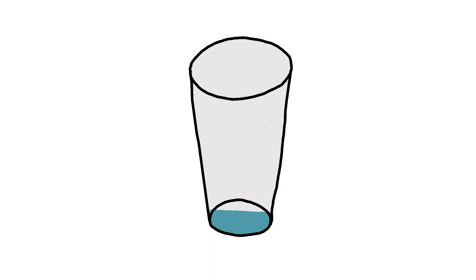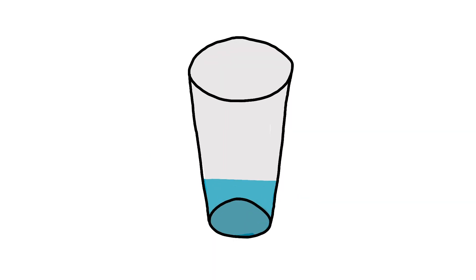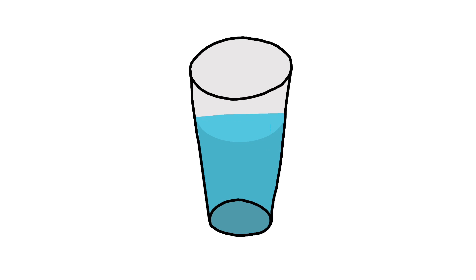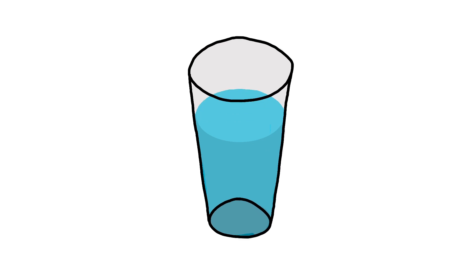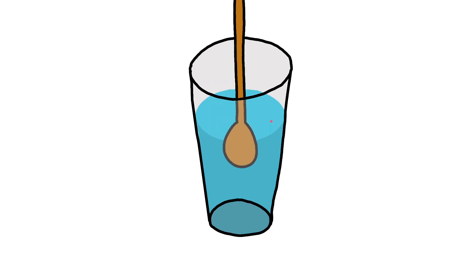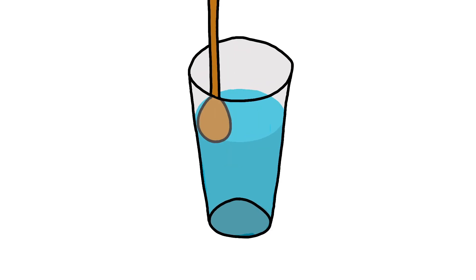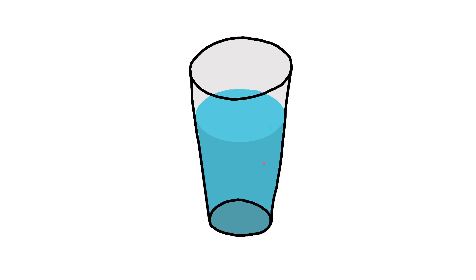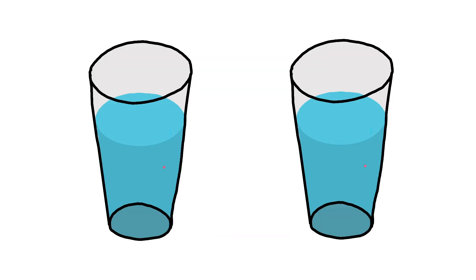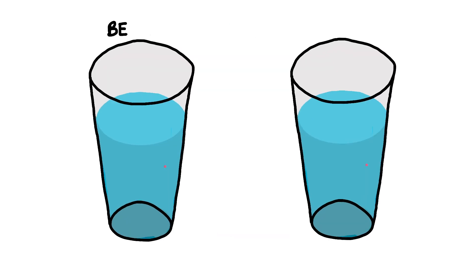A more real-world, three-dimensional model would be: let's say you have a glass of water. You take that glass of water and you stir the contents with a spoon. According to Brouwer's theorem, there's going to be at least one water molecule that ends up in its original position, even if it moved around during the stirring.